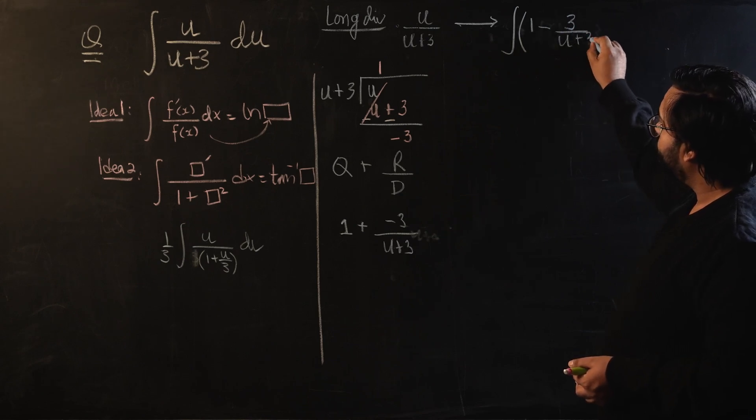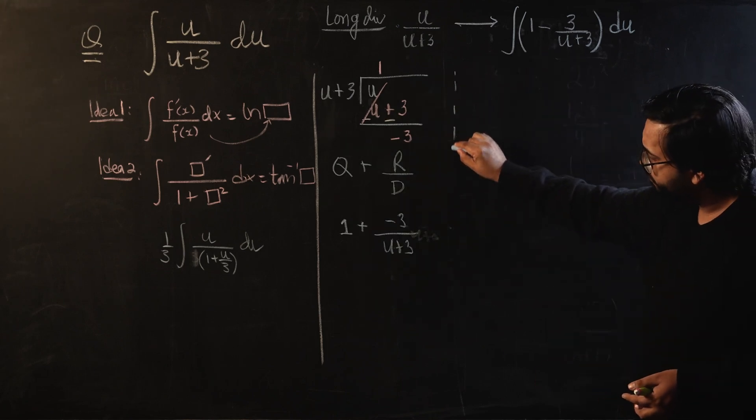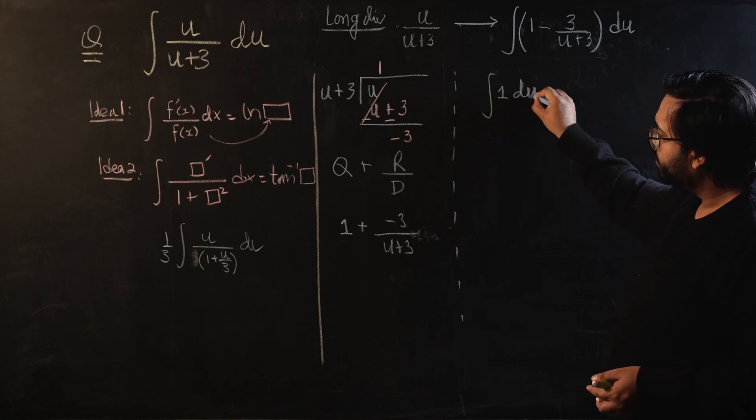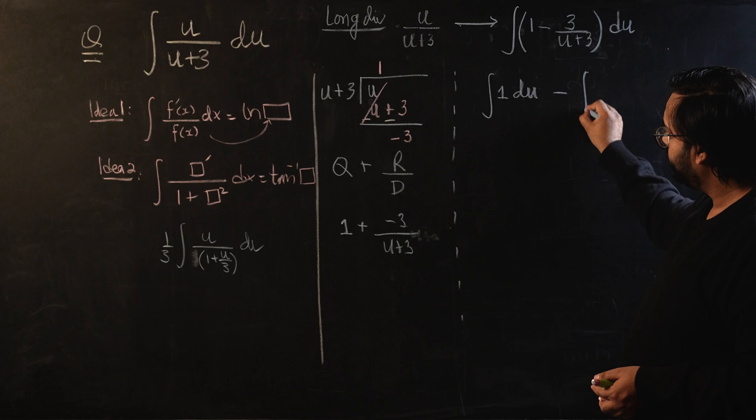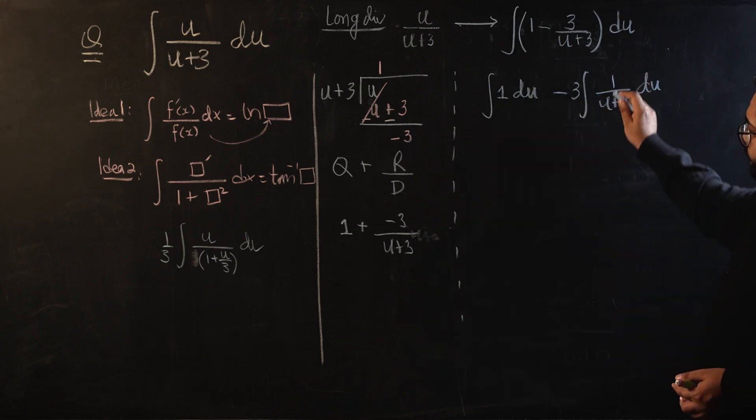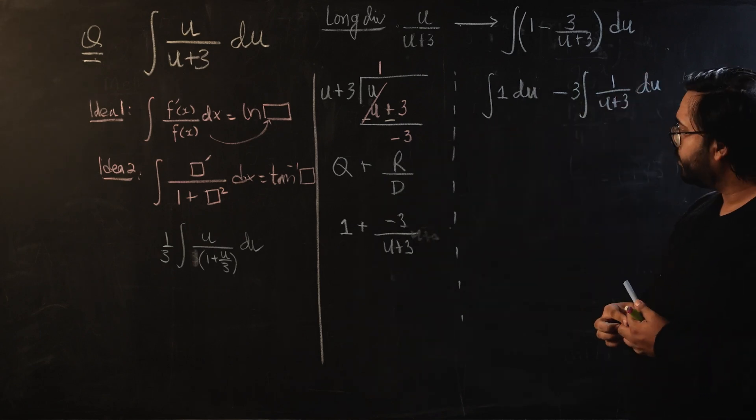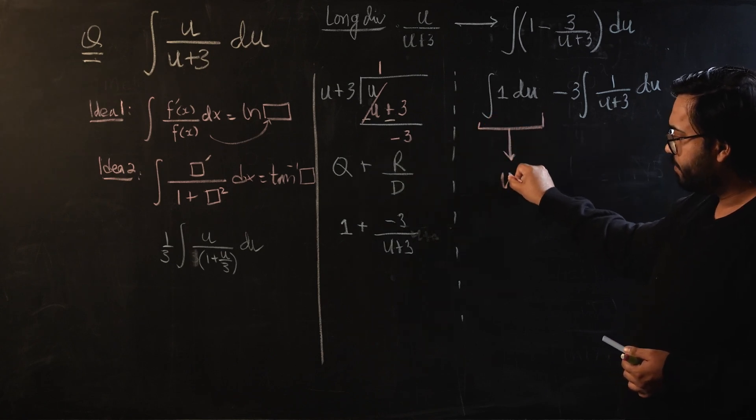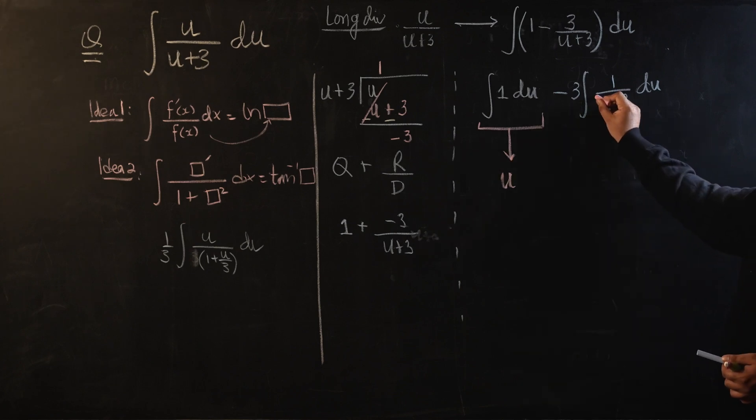Now I want the integral of 1 - 3/(u+3). This will be a very simple idea. We're going to break these two terms into two parts. We will integrate 1 separately and we will integrate 3/(u+3). I'm going to save a step over here. I'm going to send 3, which should be written over here, to outside this integral sign, and I'll have 1/(u+3).